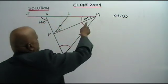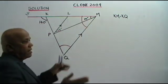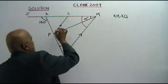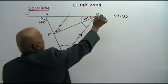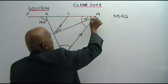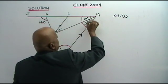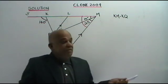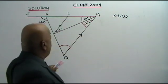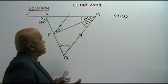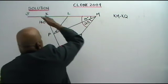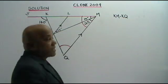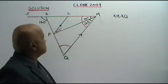These two lines, PL and QM, are parallel. And if they are parallel, angle LPM of 25 degrees is equal to angle PMQ — 25 degrees — as alternate angles, because these two lines are parallel. And like I said earlier, KM is equal to KQ, therefore these two angles are equal.